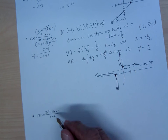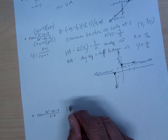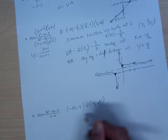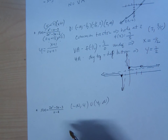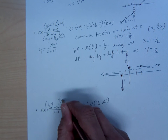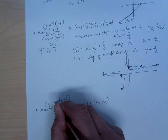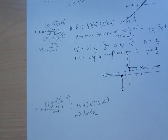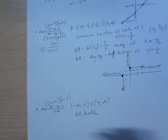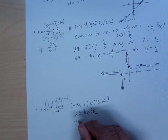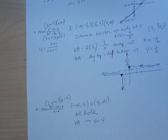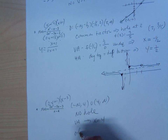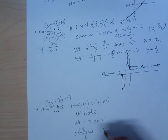That's from the previous example — problem 4. Domain: negative infinity to 4, union 4 to positive infinity. Factoring the numerator gives (2x minus 3)(x plus 1) — no hole. Vertical asymptote at x equals 4 because f(4) is undefined. The top degree is one more than the bottom, so you have an oblique. I just did the division — the oblique asymptote is y equals 2x minus 3.